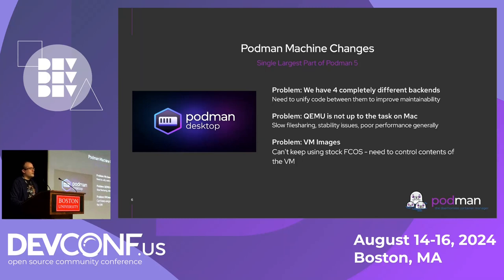We also wanted to get ahead of the curve on image mode for our VM images. Previously, we had stock Fedora CoreOS images and we had to wait until Podman was released, then about two weeks for it to get into Fedora, then potentially two weeks after that for it to make its way into an FCOS Compose. We had a four-week lead time before we could use new Podman in Podman Machine — really suboptimal. By taking control of our own destiny and maintaining our own OS images, when we shipped Podman 5.0, we were able to have Podman 5.0 in the VMs day one.